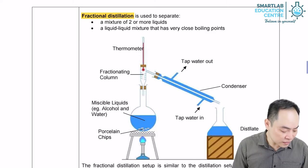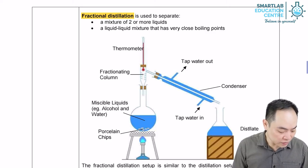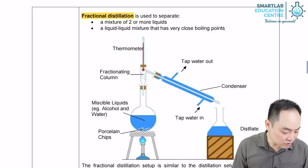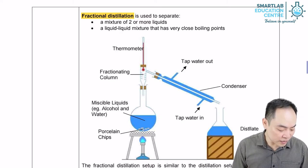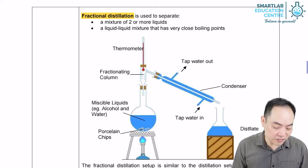The vapors or the liquids with higher boiling points will condense along the column and the glass beads and fall back into the distillation flask.